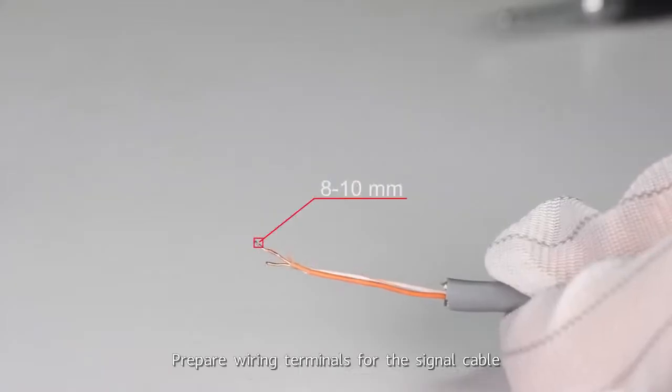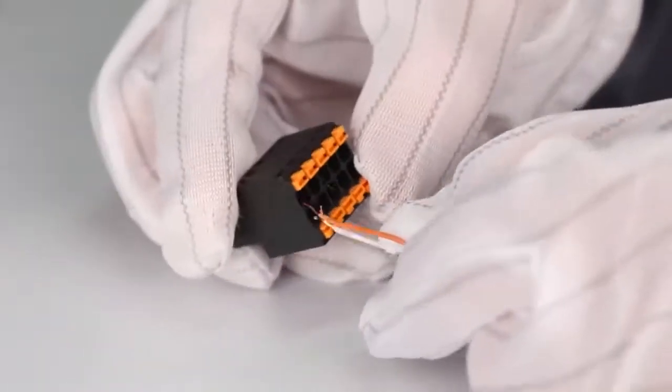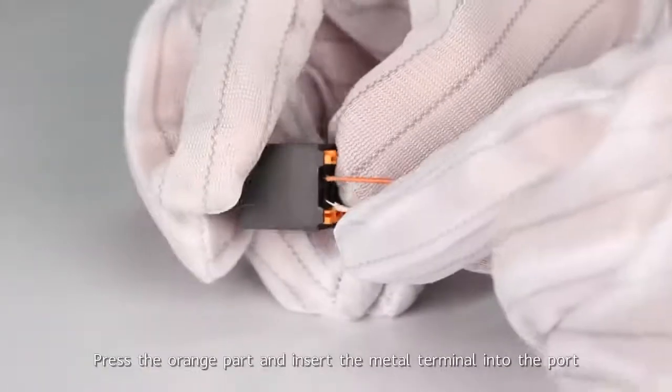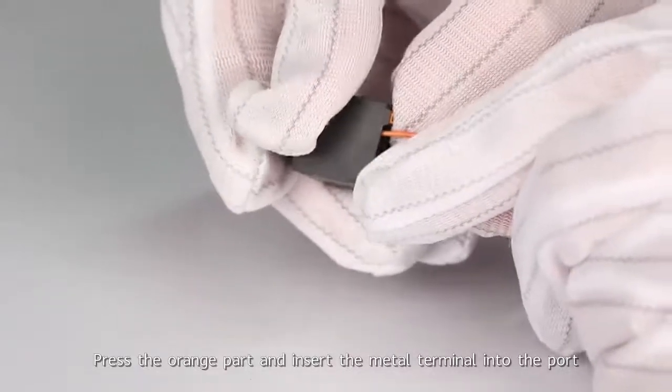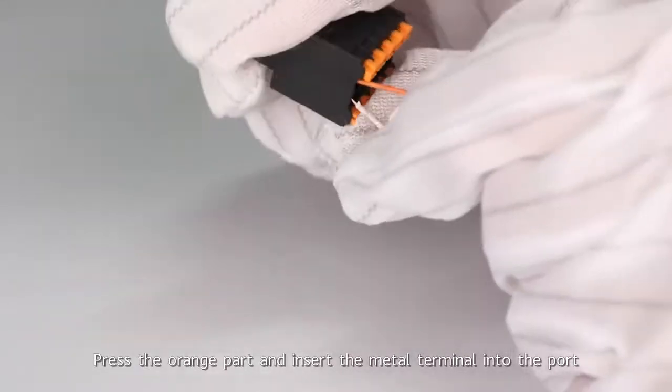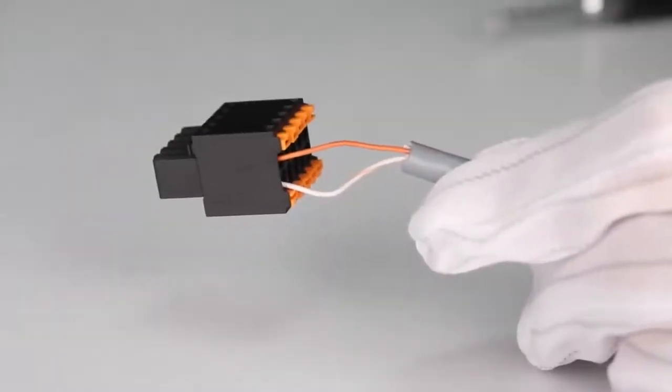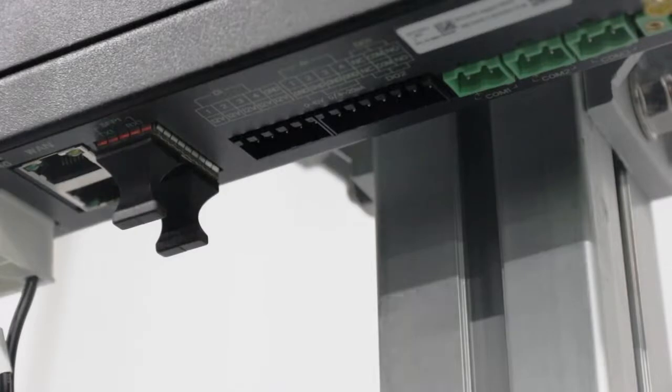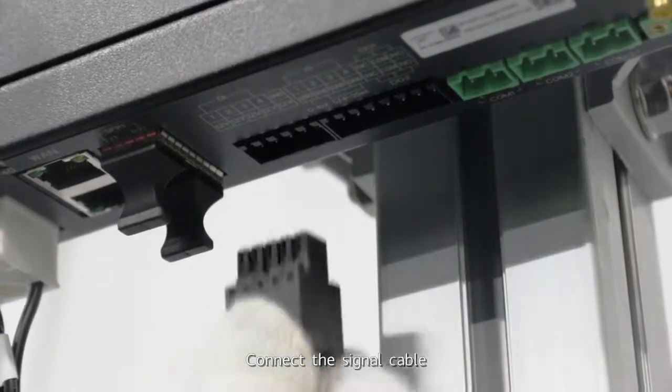Prepare wiring terminals for the signal cable. Press the orange part and insert the metal terminal into the port. Connect the signal cable.